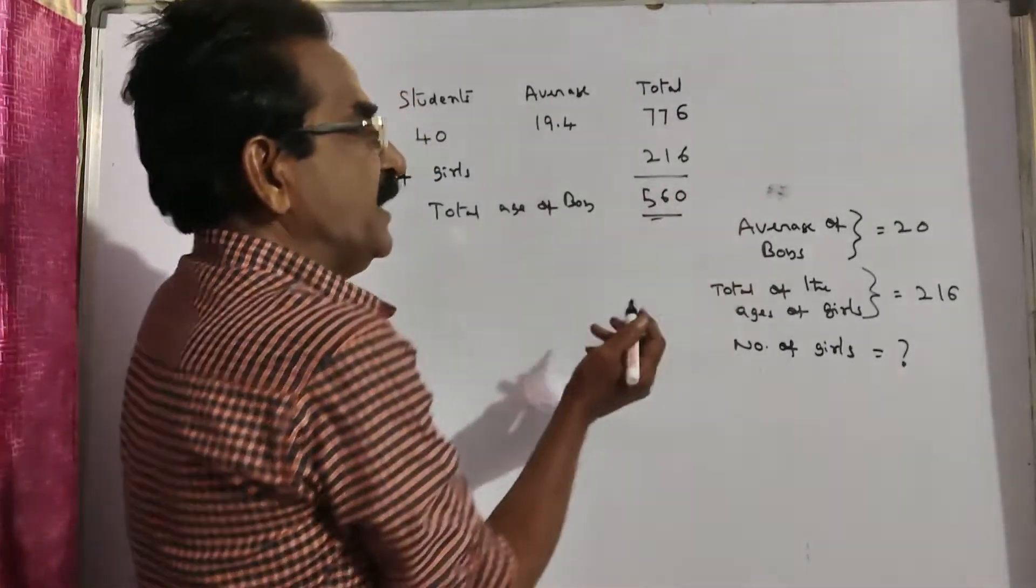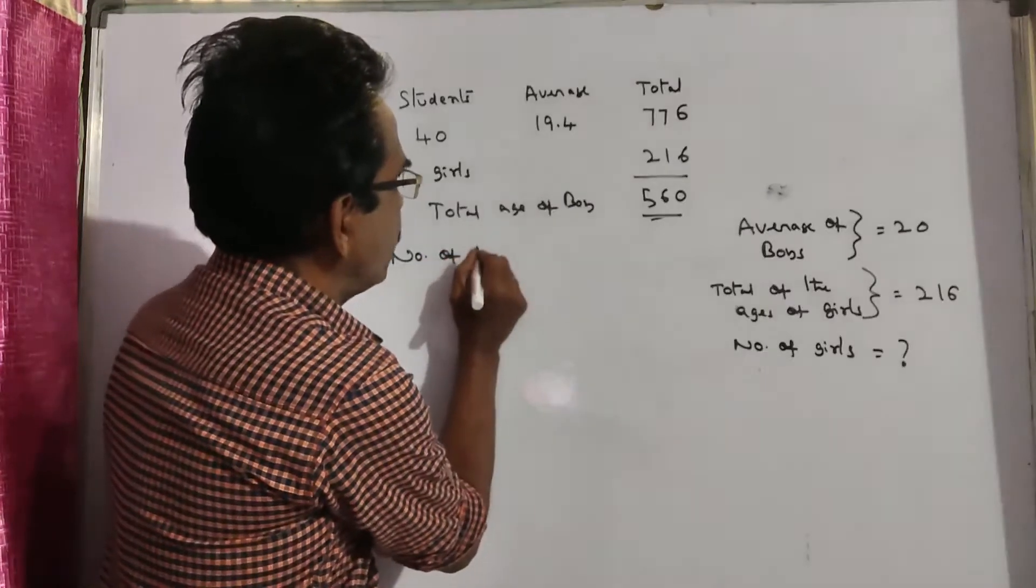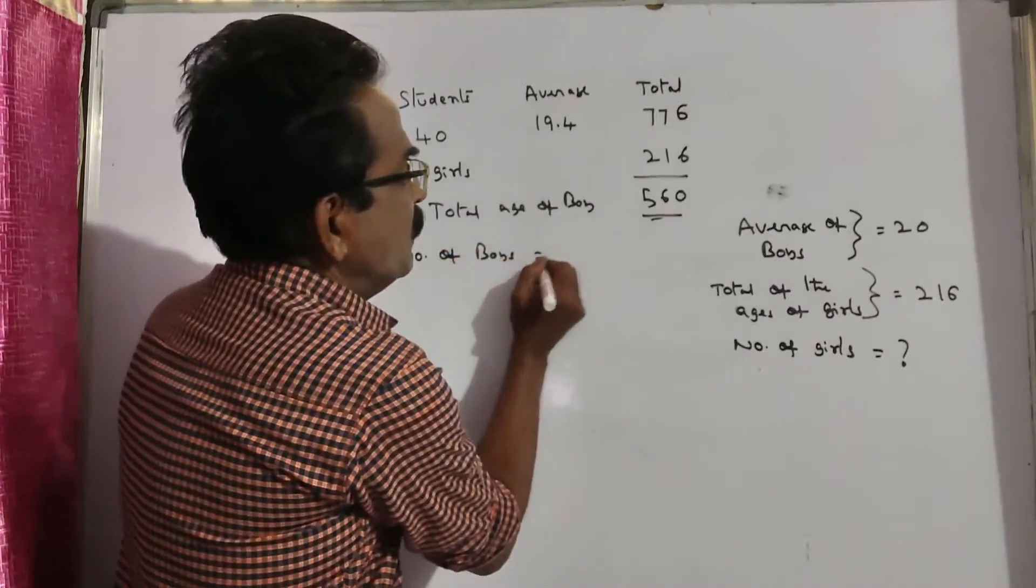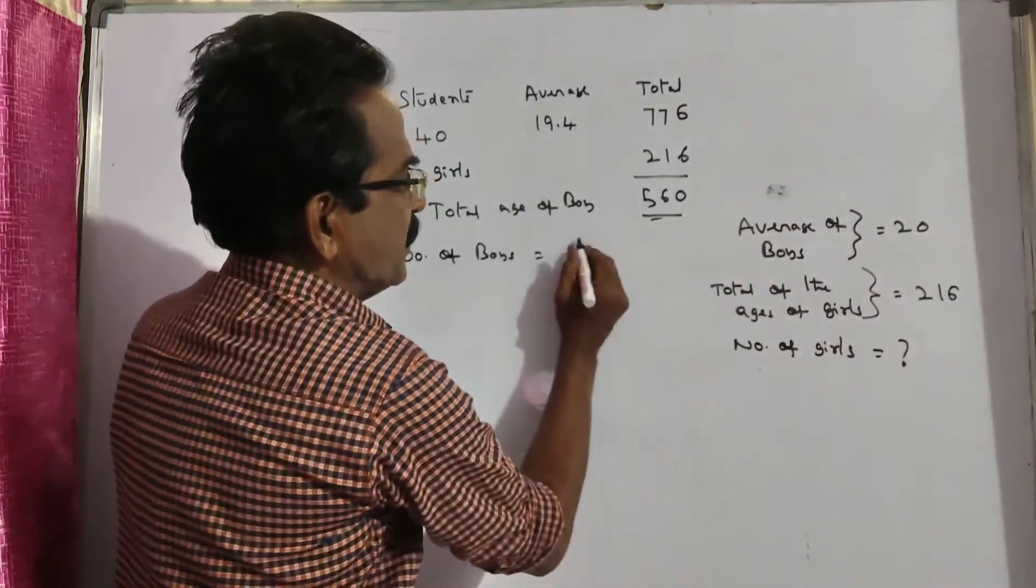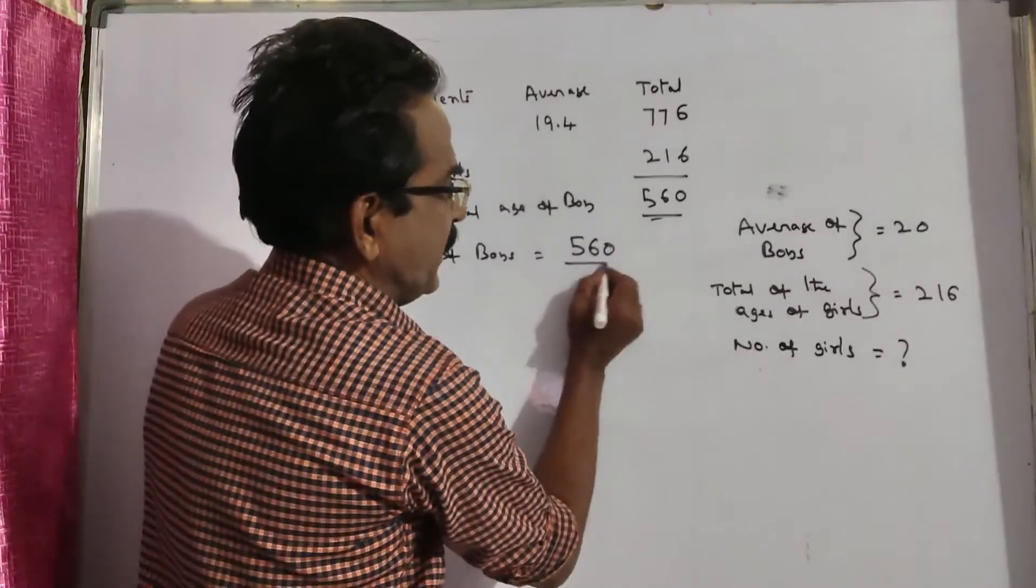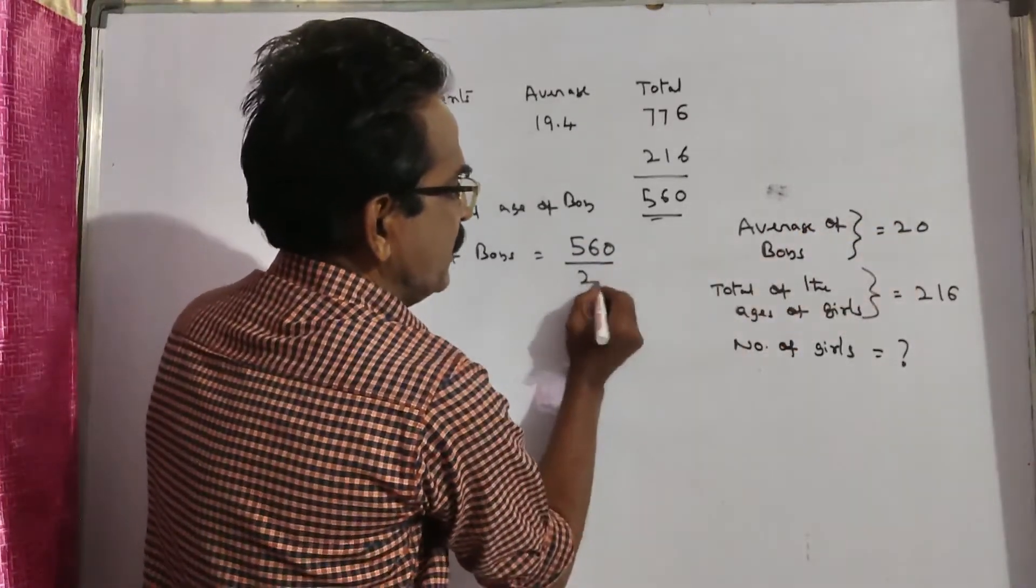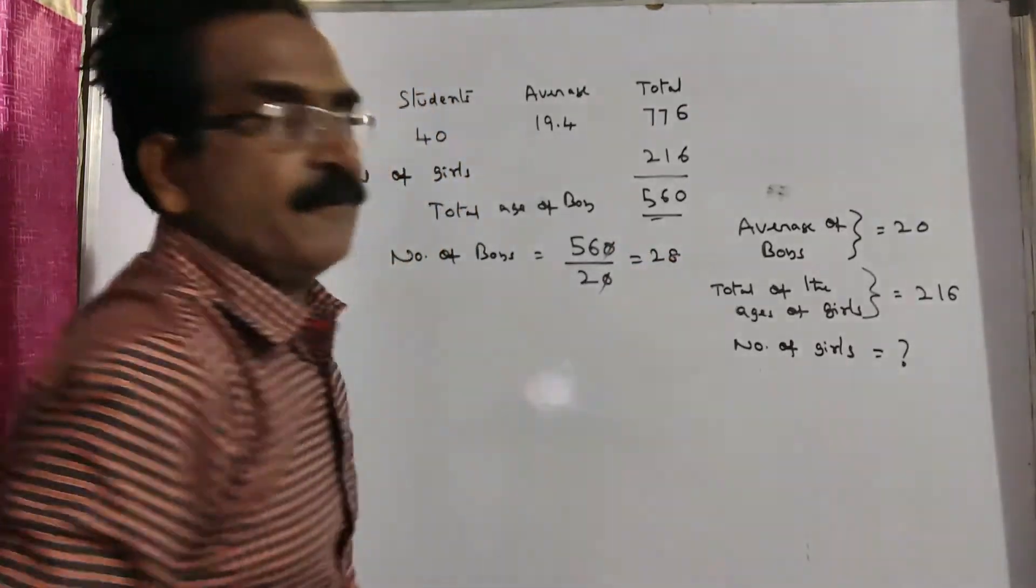And we can find the number of boys. Number of boys is equal to sum of their ages by average. Sum by average is equal to number. So total sum of the ages by average gives the number of boys.